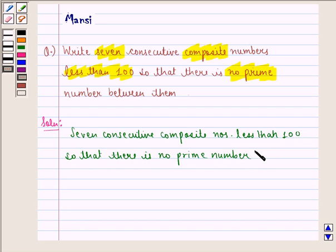Seven consecutive composite numbers less than 100 so that there is no prime number between them are 90, 91, 92, 93,